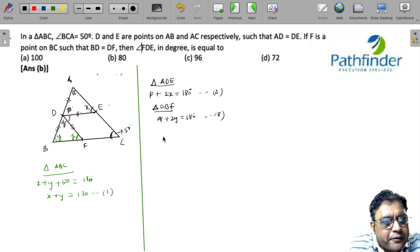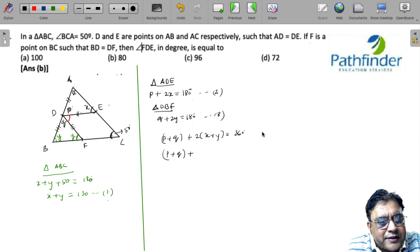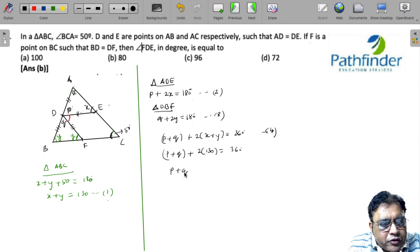So if I add up equations 2 and 3, I will get P plus Q plus 2 into X plus Y must be 180 plus 180, that is 360 degrees. So P plus Q, putting X plus Y as 130 from equation 1 in this equation, let us call this equation 4. 2 into 130 is equal to 360 degrees. So you get the value of P plus Q as 100 degrees.